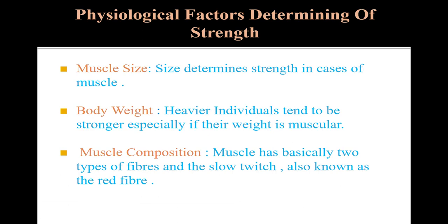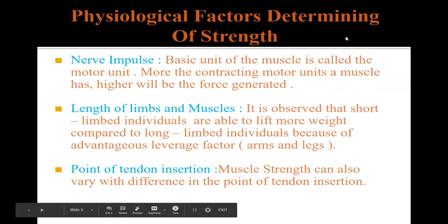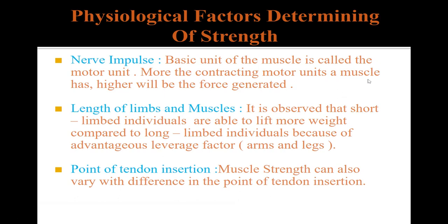Our next point is nerve impulse intensity. The basic unit of the muscle is called the motor unit. The more motor units a muscle has, the higher will be the force generated. A stronger nerve impulse to the motor unit from the brain means a stronger contraction, which leads to more muscle strength.